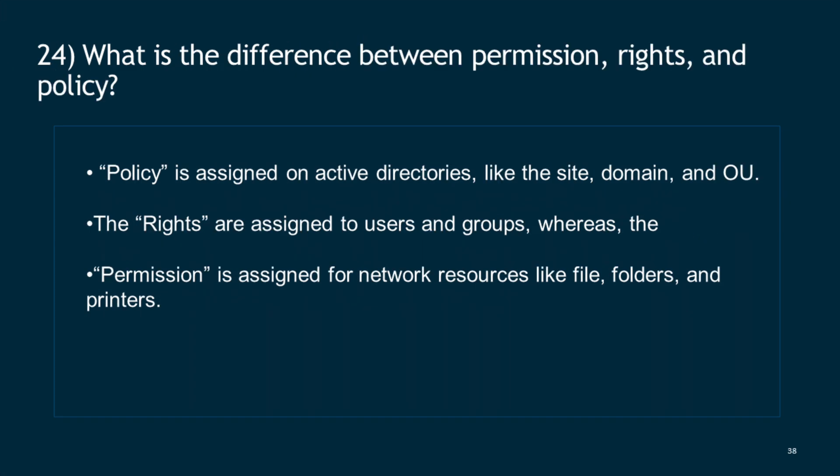Question 24: What is the difference between permission, rights, and policy? Policy is assigned on Active Directory containers like site, domain, and OU. Rights are assigned to users and groups, whereas permission is assigned for network resources like files, folders, and printers.